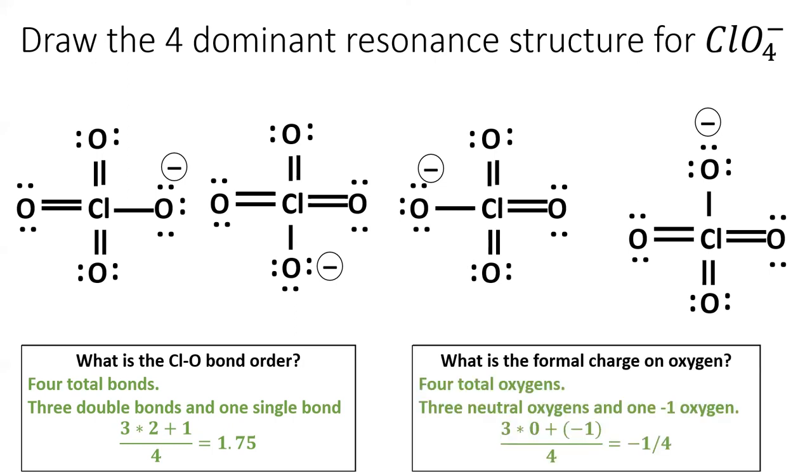We calculate the formal charge in a very similar way. There are four oxygen atoms total, three are neutral, and one has a formal charge of minus one. The math takes the average formal charge, and we get negative one-quarter. Thus, the extra electron in perchlorate is evenly divided amongst the four oxygen atoms.